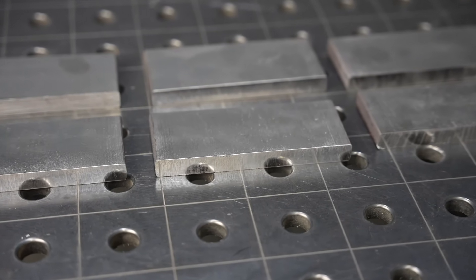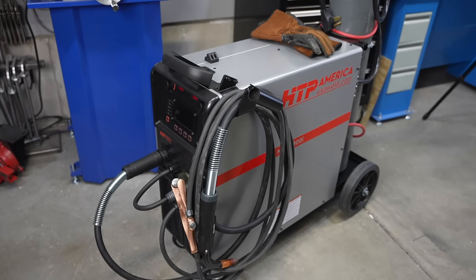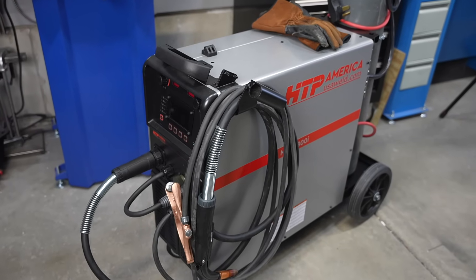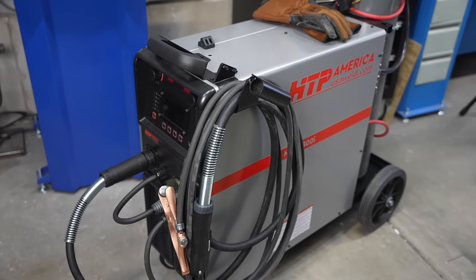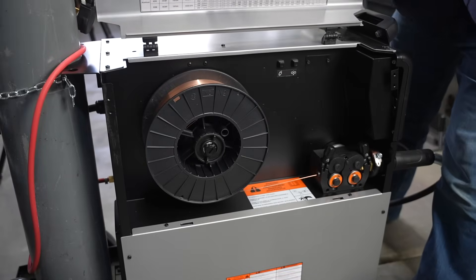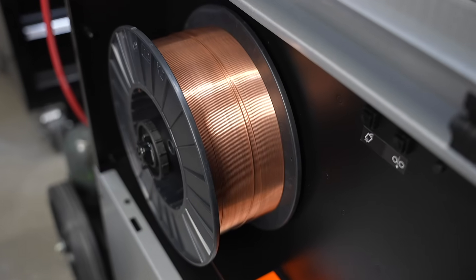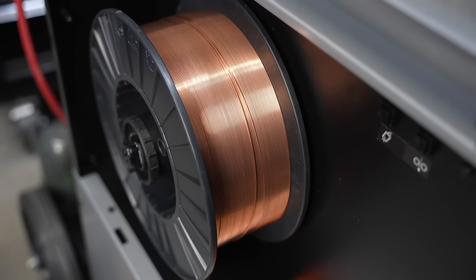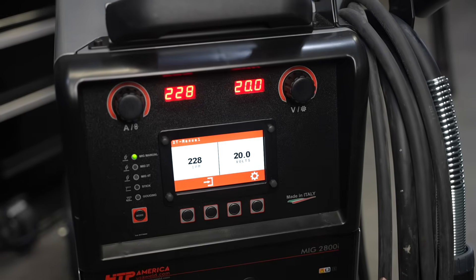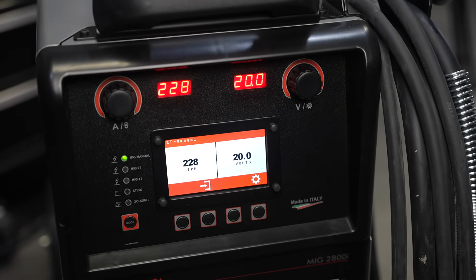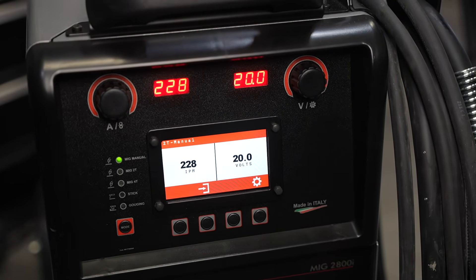I do want to give a huge thanks to HTP for providing the equipment to make this and some follow-on videos on some thicker material. This is their new MIG 2800—it's a 300 amp machine. I have some 0.045 or 1.2 millimeter wire loaded, just solid wire.